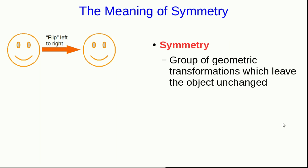We saw way back at the very beginning of Phys 1104 that the meaning of symmetry mathematically is the group of geometric transformations which leave an object unchanged. So for example, we can talk about the symmetries of this happy face. If you flip it left to right, it remains unchanged. It looks exactly like it did before you did the left-right flip, and so we say it is symmetric under that geometric transformation.